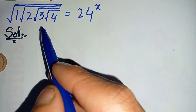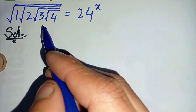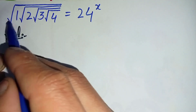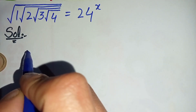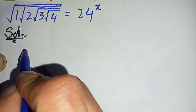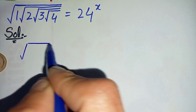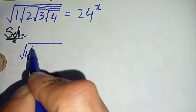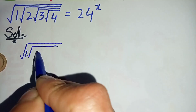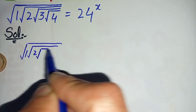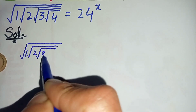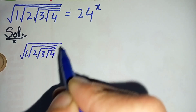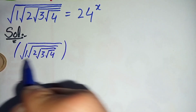First, I will take square on both sides to eliminate the square root. So let us take square on both sides of this equation. It will become: square root of 1 times square root of 2 times square root of 3 times square root of 4, whole square.